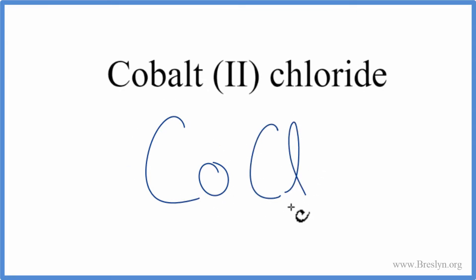Cobalt is a metal, and then chlorine, that's a non-metal. So this is an ionic compound, and we need to think about the ionic charges. We have a little bit of help here. In the name, cobalt-2, this Roman numeral 2 means cobalt is a 2+. It's a transition metal, and this tells us the ionic charge.